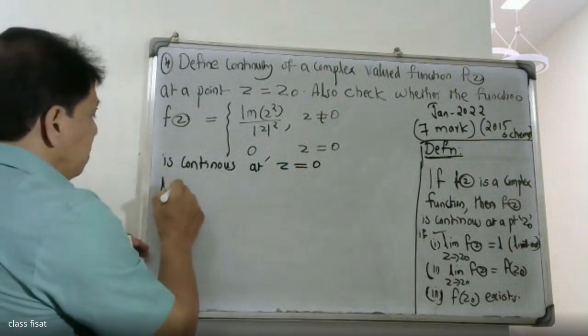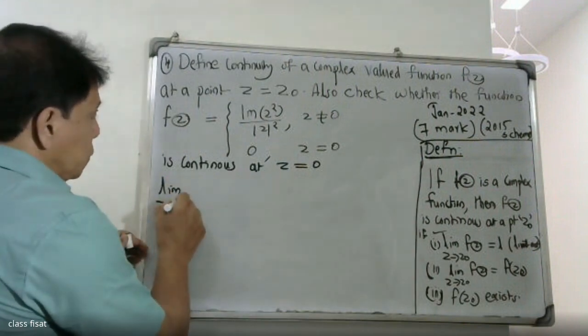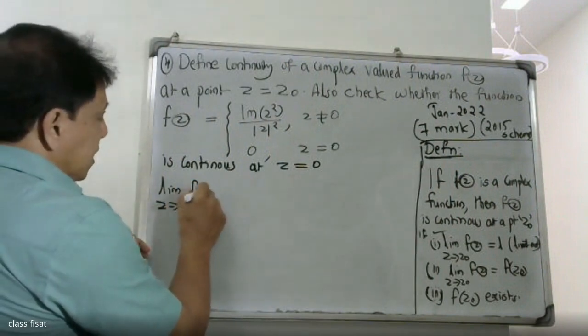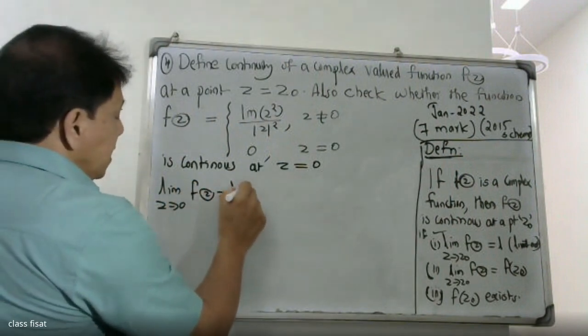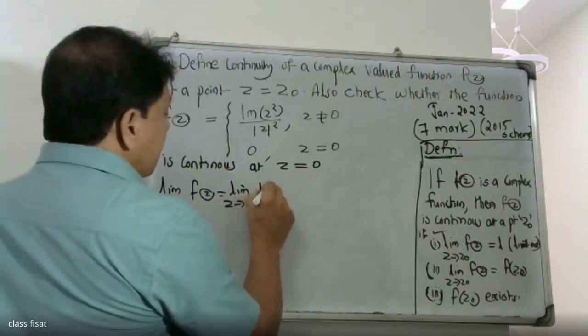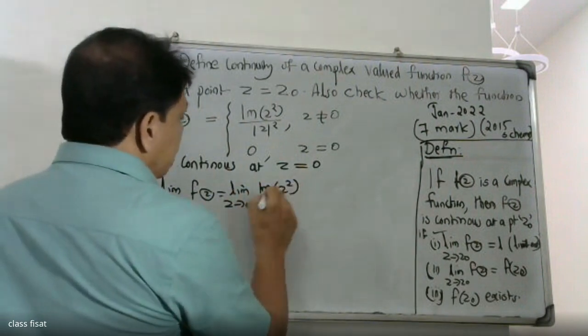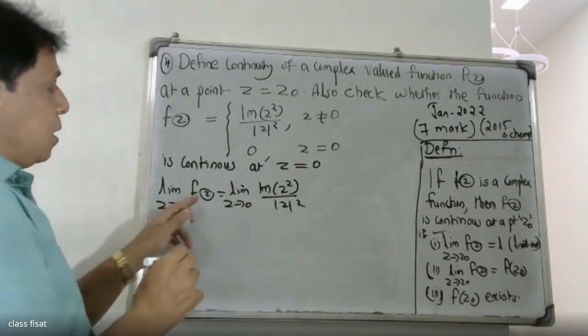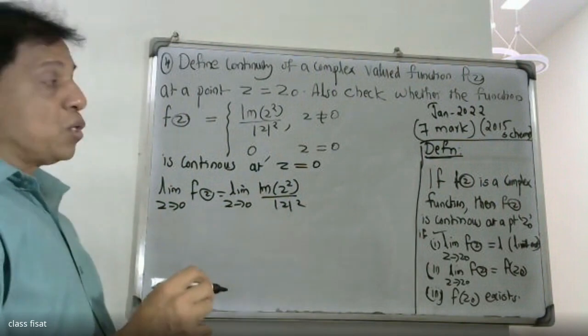The first condition: limit as z tends to zero of f of z equals limit as z tends to zero of imaginary part of z² divided by modulus of z².